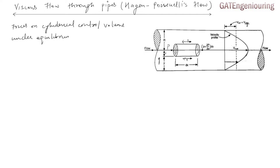If the flow is viscous, let's do it quickly. You can see that this is the cylindrical volume of fluid which we have considered for the analysis. This is the pressure force p acting on the cross-sectional area, and also the shear stress which acts opposite to the flow direction — so shear stress into area gives the shear force. The forces acting on this cylindrical volume under equilibrium are the total forces in terms of pressure and viscosity.